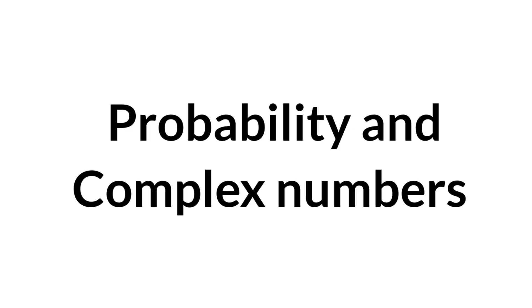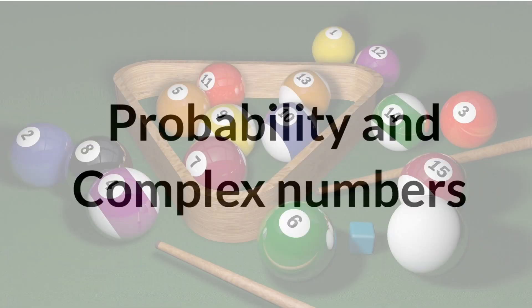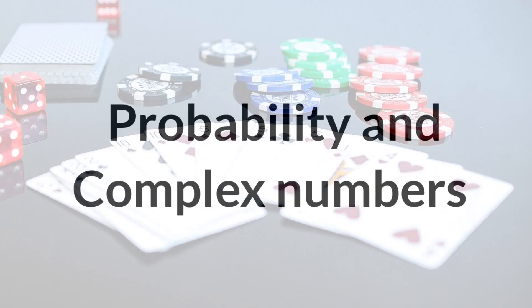From second year Math topics, start with Probability and Complex Numbers. In the Probability chapter, the most common questions involve balls — green balls, red balls — picking probability, dice problems, and card problems. Different tricky question patterns appear on dice, balls, and cards. Also cover Random Variables and use Permutations and Combinations within Probability. Next, Complex Numbers is an easy chapter with good weightage.